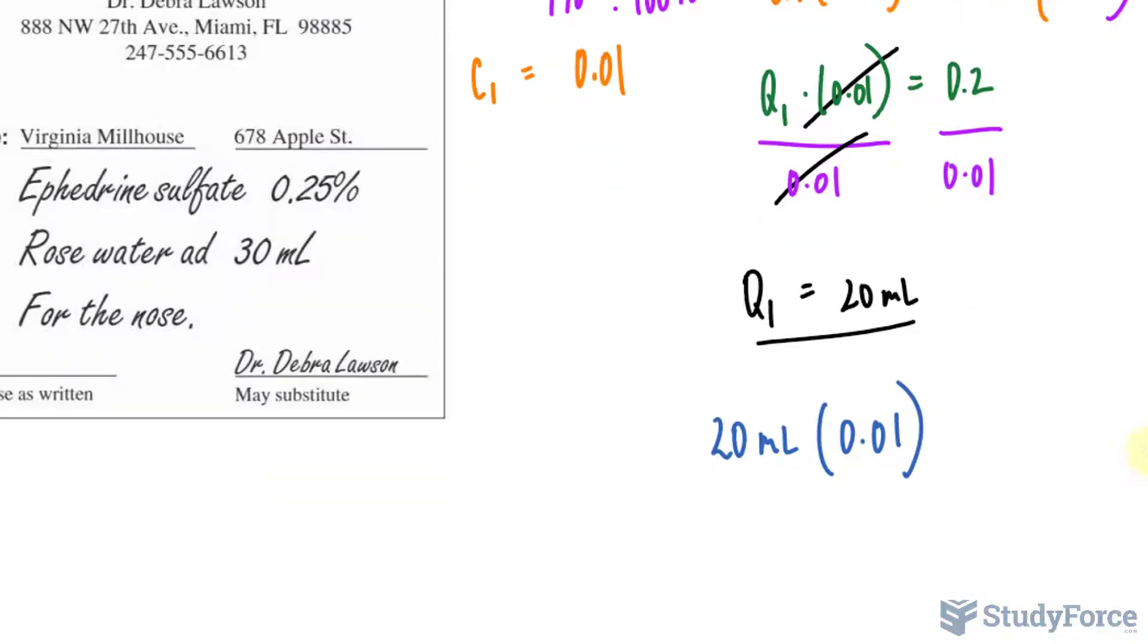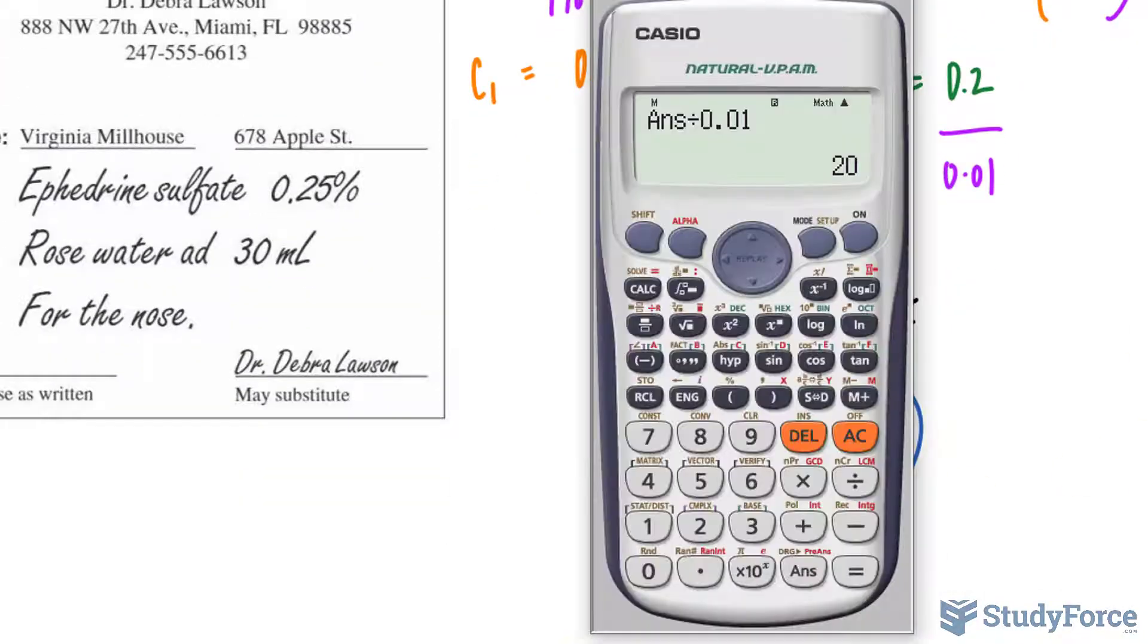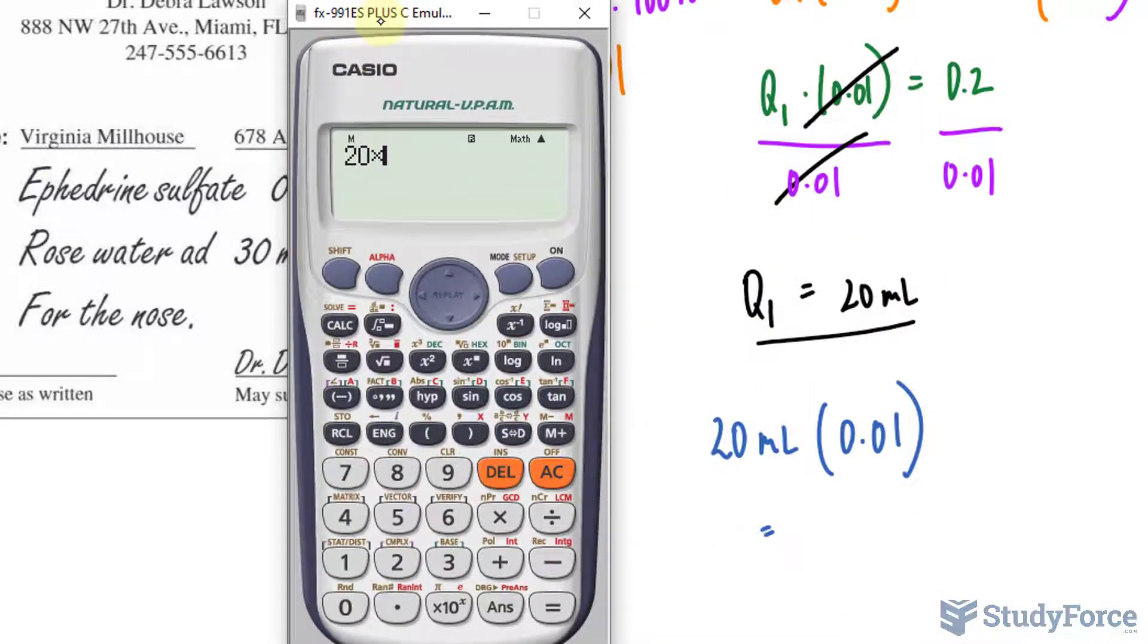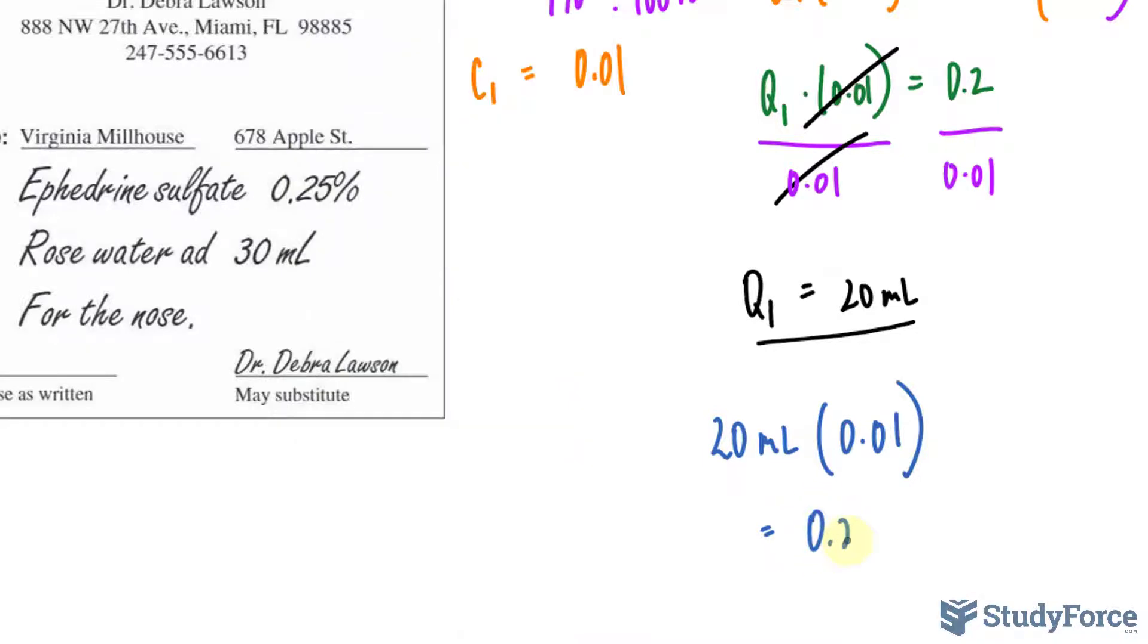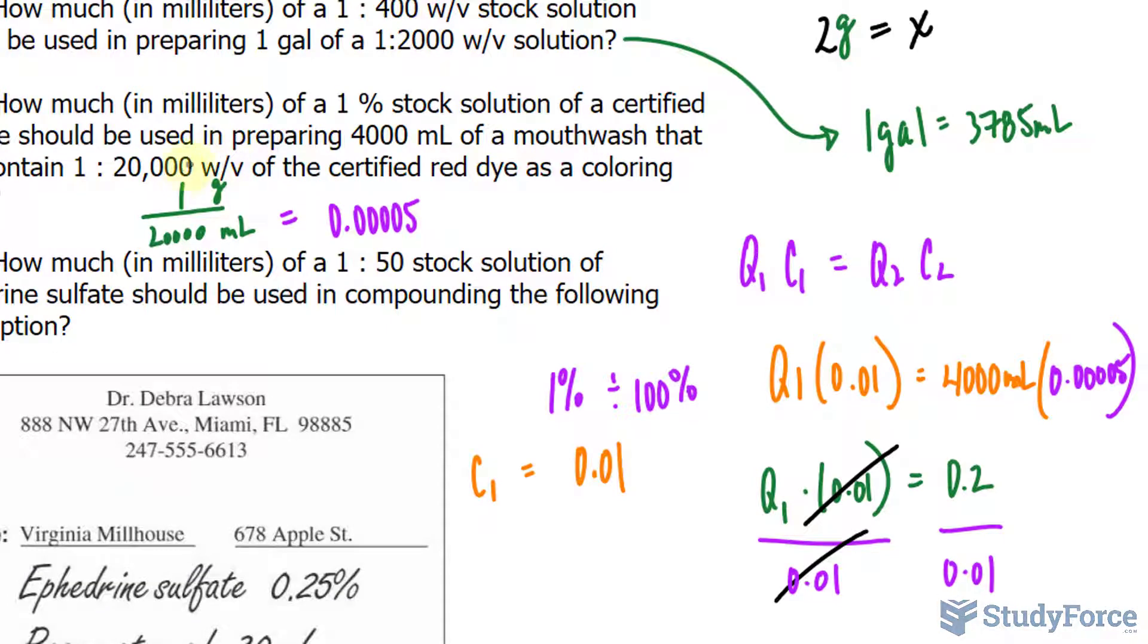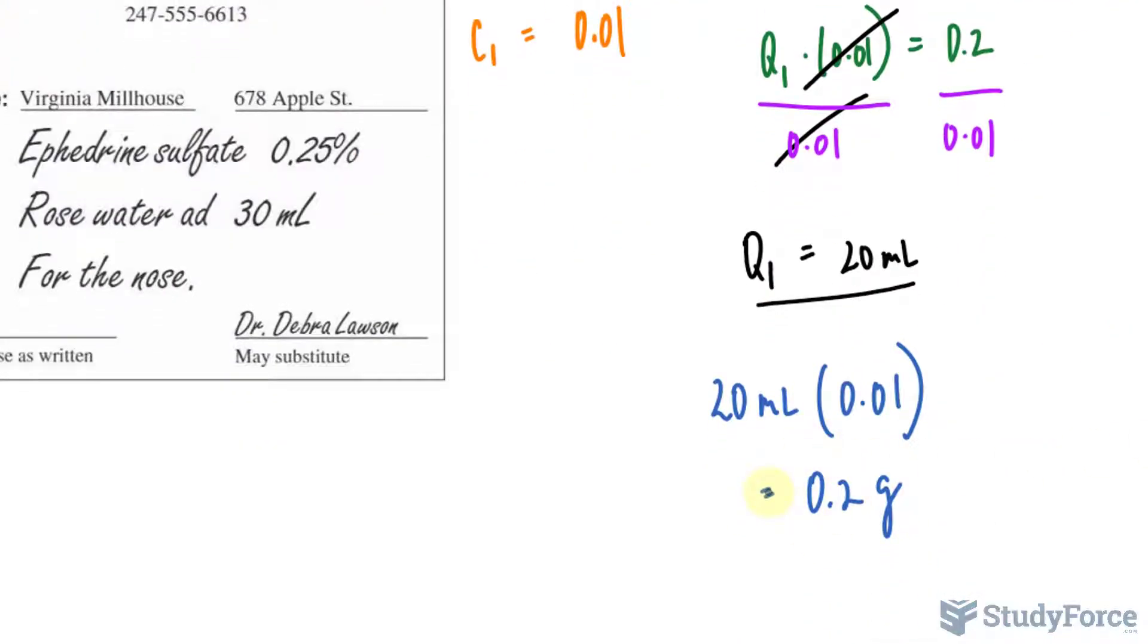Remember 1%. Multiplying these two out should give you 0.2 grams of active ingredient, and the reason why I wrote down grams is because we made that initial assumption that it's weight per volume and that initial assumption was that the weight, its units are in grams. So 0.2 grams out of the 20 milliliters is active ingredient.